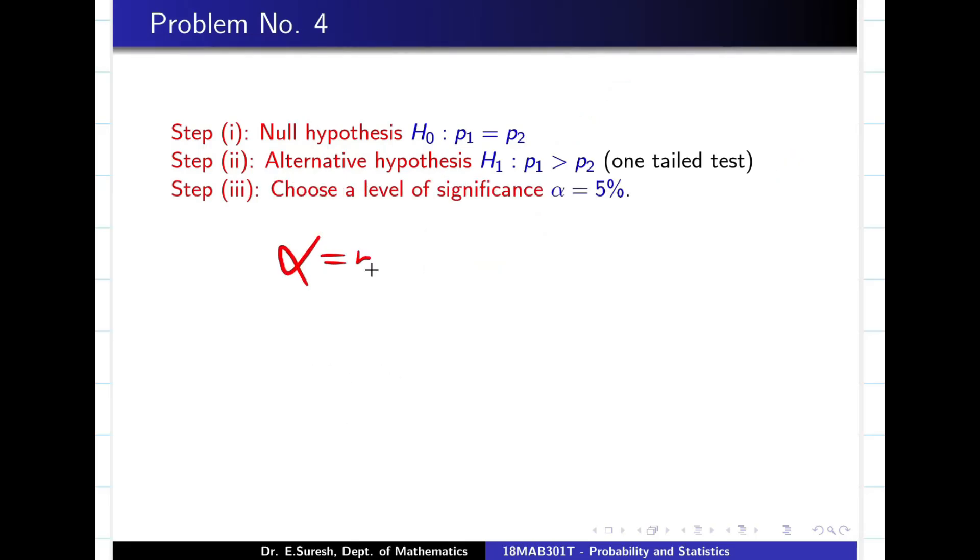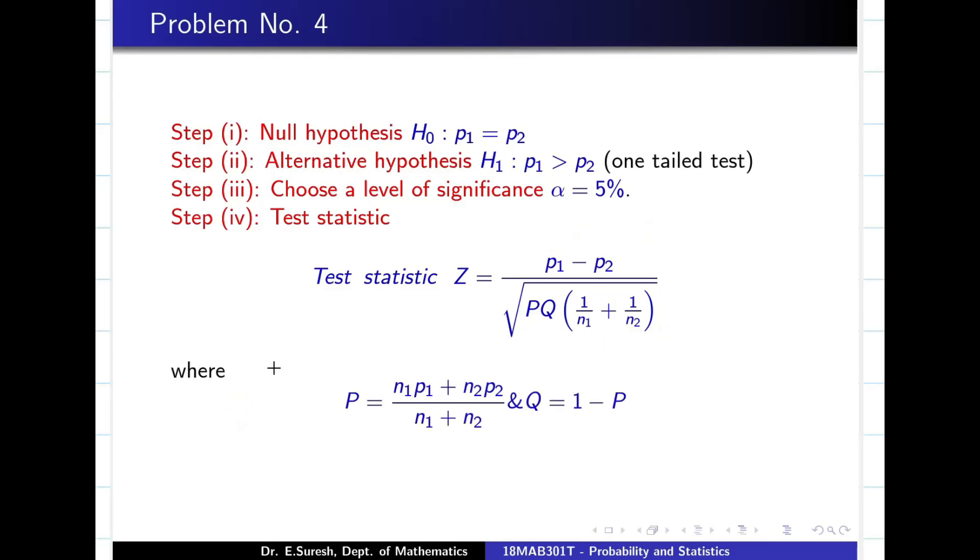Alpha is 5%. Once alpha is 5%, Z alpha is what? 1.96, very wrong. We should not write 1.96. Why? Because it is one-tail test. So we should be careful. For one-tail test, Z alpha is 1.645. So now we know P1, P2, N1, N2. Capital P, I do not know. Use the formula, substitute the value. The important thing is we have to fix whether it is one-tail or two-tail by reading the question again and again carefully.